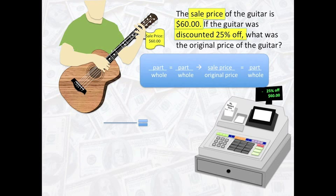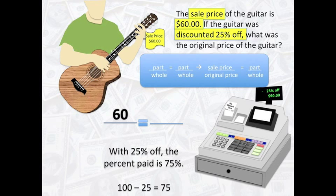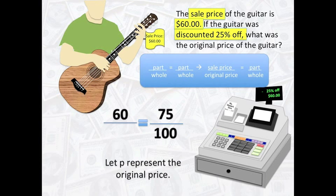Let's set up a proportion for this problem. The sale price is $60, so $60 can go in the numerator of the left side of the equal sign. Now, with 25% off, the percent paid is 75%. So, we need to subtract 25 from 100 to get 75, and put 75 over 100 on the right side of the equal sign. Since the original price is unknown, let P represent the original price.